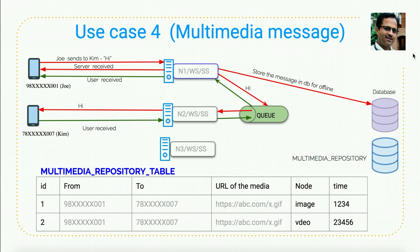For multimedia messaging, the extra components are a multimedia repository table and a repository storage location for image, audio, or video files. If Joe wants to send a multimedia message to Kim, his client connects to node 1. Node 1 does two operations: it stores the message in the database with fields like ID, from, to, URL of the media, media type (image or video), and timestamp. Simultaneously, node 1 connects to an HTTP server which uploads the multimedia content to the multimedia repository.